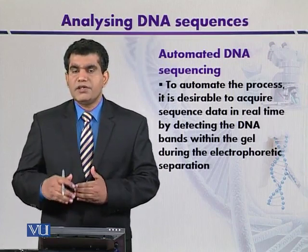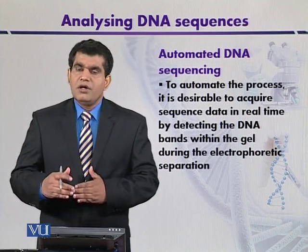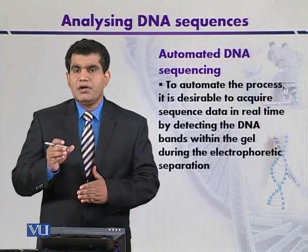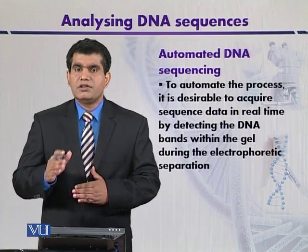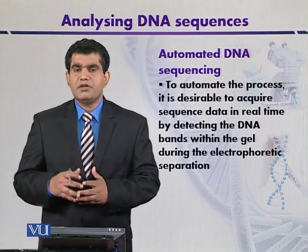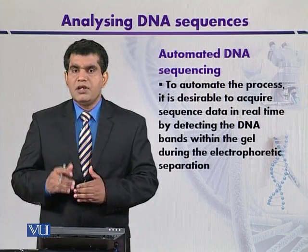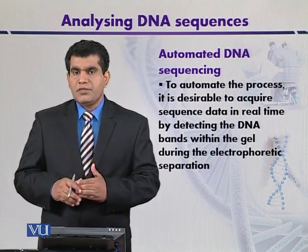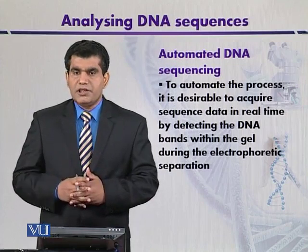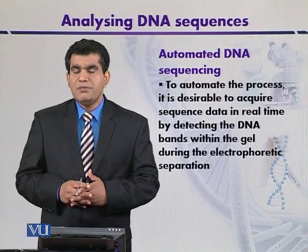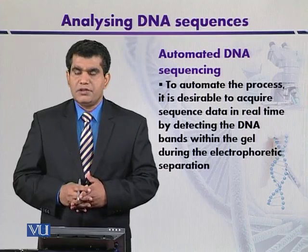Once the chain termination reaction is performed using different labeled fluorophore dideoxynucleotide triphosphates, all four mixtures can be run within a single lane of the gel. Four lanes are not required; the four mixtures are run on the same lane and separated depending upon the length of the DNA fragments. The detector detects the emission of different dyes, and each emission of a particular color corresponds to a particular base. Different lanes may contain different samples, so more samples can be run within a single slab of gel — this is one advantage of automated sequencing.